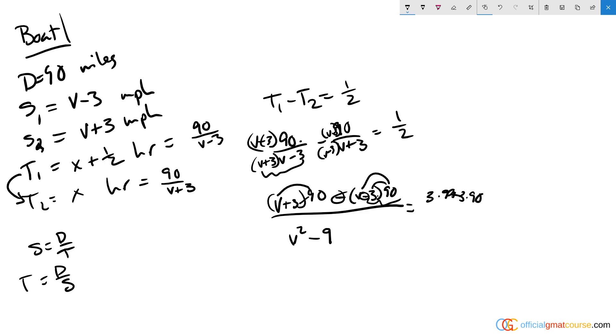That's the same as 6 times 90, so I have 6 times 90 on top, v squared minus 9 on the bottom, and this all equals one-half. If I multiply both sides by 2, I get 12 times 90 over v squared minus 9 equals 1. If I reorganize, I get 12 times 90 equals v squared minus 9.